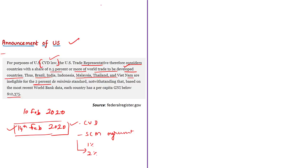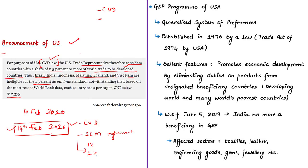The US can now easily impose countervailing duty on products imported from these countries. This is the second move of the United States particularly against India in the context of trade benefits. With effect from 5th June 2019, the US terminated India from trade benefits under its GSP program. GSP stands for Generalized System of Preferences — a trade preference program of the United States established in 1976 by the Trade Act of 1974, which promotes economic development by eliminating duties on thousands of products imported from about 100 designated beneficiary countries.